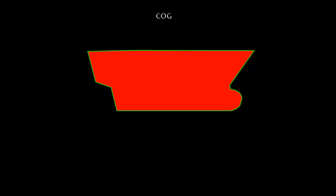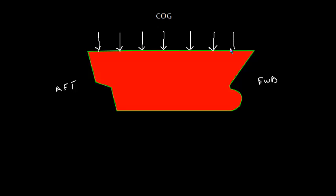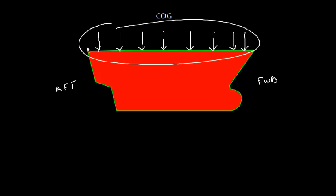In this video I am going to discuss the center of gravity of a ship. Suppose this is a vessel here — this is the forward part, this is the aft part. The weight of the ship acts vertically downward throughout the length. Imagine the total ship's length with weight acting vertically downward. Some of these weights will act at a specific point, and that point is called the center of gravity.